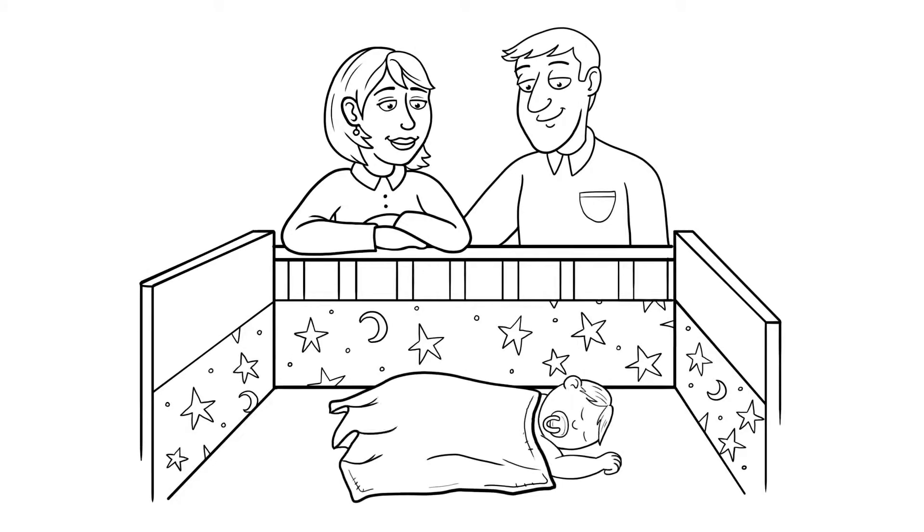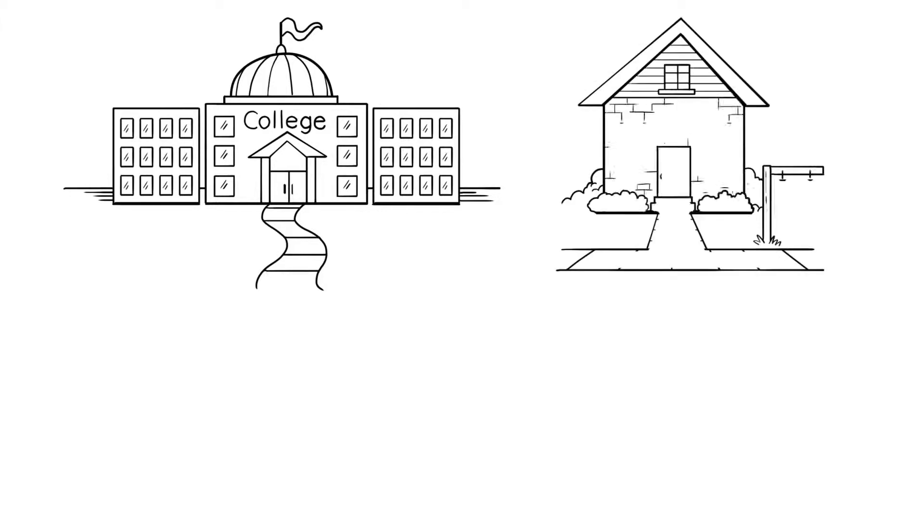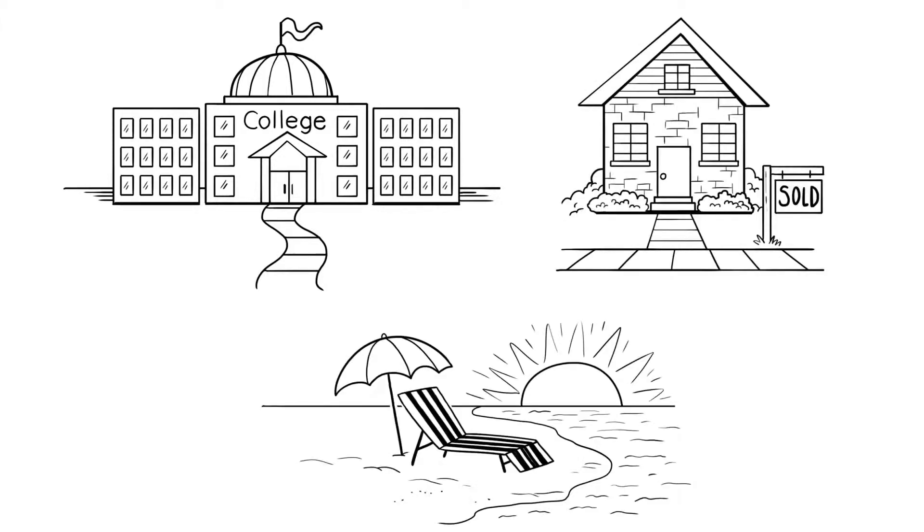As a parent, you want to make sure that your child has a happy, healthy future, that they can go to college, buy a home for their family, and retire at a reasonable age.